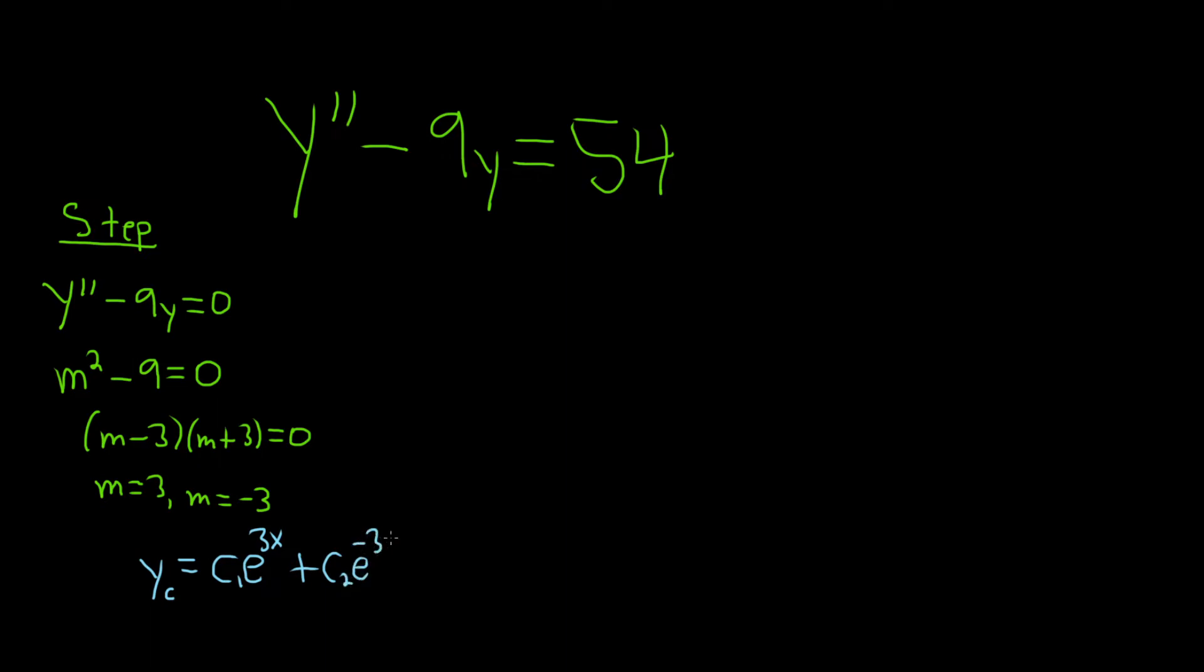Y sub c, if you're new to this, is called the complementary function or the complementary solution. I like to think of it as the homogeneous solution. It's the homogeneous part, because we pretended it was equal to 0, and then we solved it to get yc. So it came from the homogeneous solution.